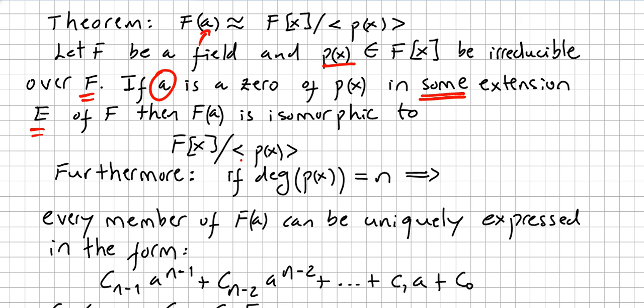That is point number one, point number two. Furthermore, if the degree of the polynomial is n, that implies every member of F can be uniquely expressed in this form.